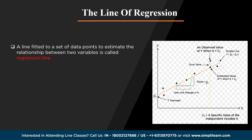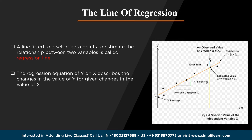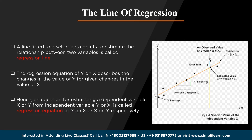The regression line is a line used to describe the behavior of a set of data — in other words, it gives the best trend of the given data. Regression lines are useful in forecasting procedures; their purpose is to describe the interrelationship between the dependent and independent variables. The regression equation of y on x describes the change in the value of y for given changes in x and vice versa, where y is the dependent variable and x is the known independent variable.